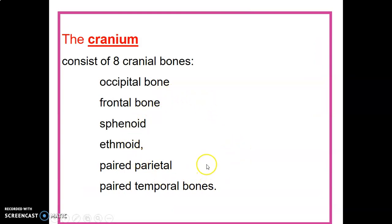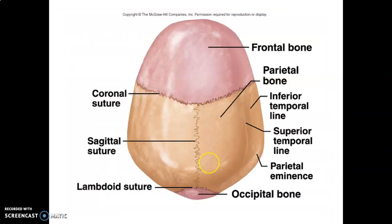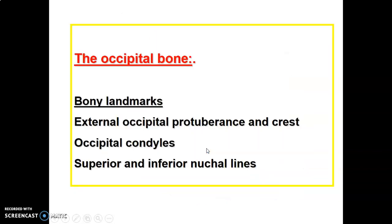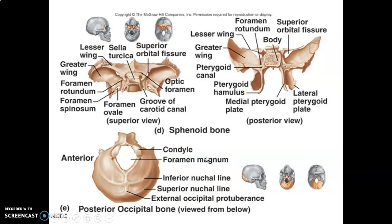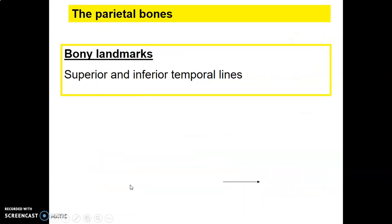There are eight cranial bones: occipital, frontal, sphenoid, ethmoid, two parietal, and two temporal bones. The frontal bone is separated from the parietals by the coronal suture; the two parietals are separated by the sagittal suture; and the two parietals are separated from the occipital bone by the lambdoid suture. The occipital bone has landmarks including the external occipital protuberance, occipital condyles, and superior and inferior nuchal lines.